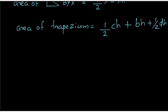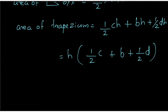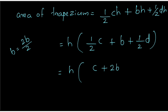This is the area of trapezium. The area equals half CH plus BH plus half DH. We have two denominators, so we multiply through by 2. Taking a common denominator of 2, we get: area of trapezium equals (2B plus C plus D) divided by 2, all multiplied by H.